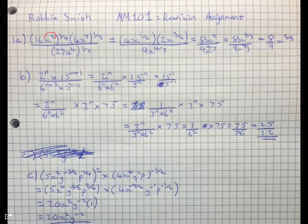You've correctly brought together your x squared and your x to the quarter to get x to the half. You've done the same with the x cubed and the x to the half here.